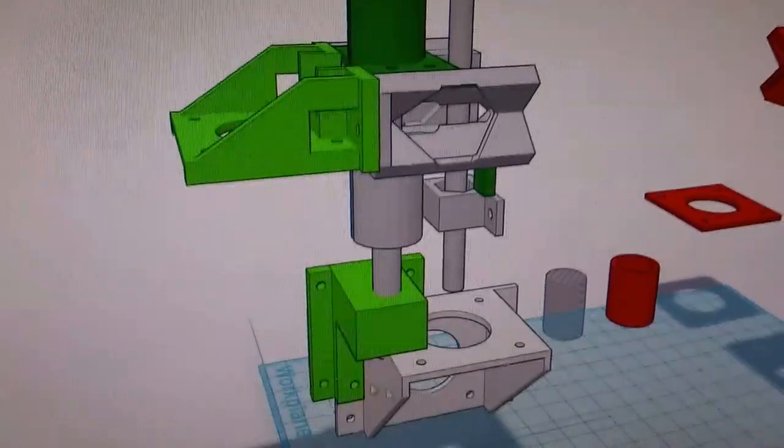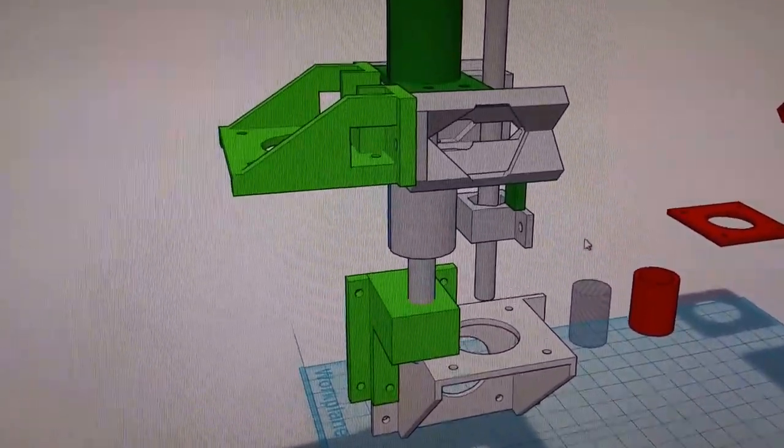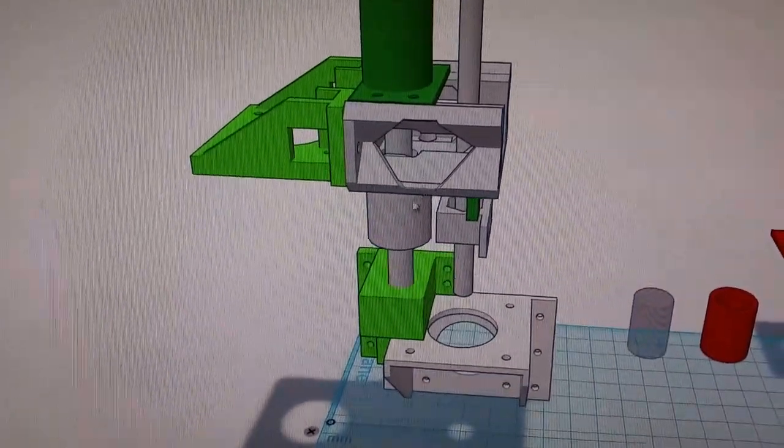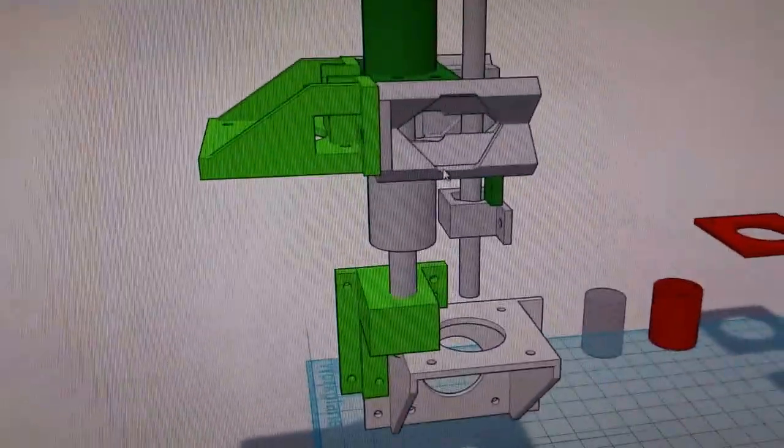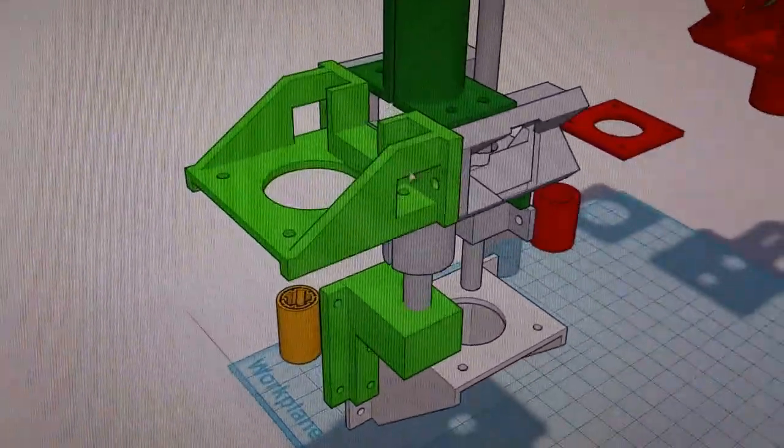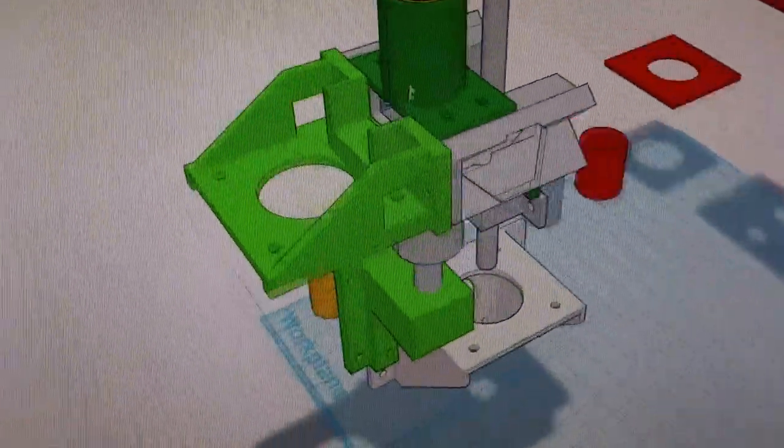I've simplified the mount where it actually can attach to my existing stepper mount shape and all these parts are either just at or just under the comfortable maximum of the printing size and volume of my Fabricator Mini. So that should be pretty safe.